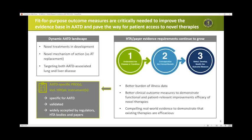There are a number of encouraging novel therapies in development that employ new modes of action, and for the first time there are treatments in development that target the liver. It is crucial that we have fit-for-purpose PRO instruments developed and validated in time for use in registration trials. We also need to improve the evidence base for the burden of disease to demonstrate the high unmet need for effective treatments, and development of validated, widely accepted alpha-1-specific PROs is critical to pave the way for broad patient access to these exciting new therapies.